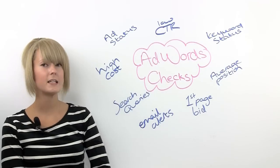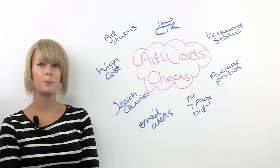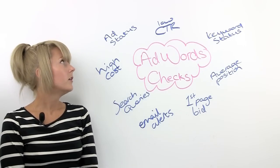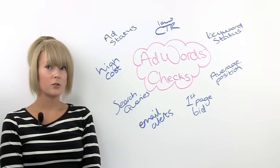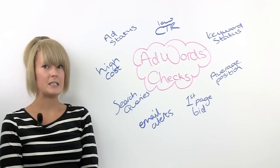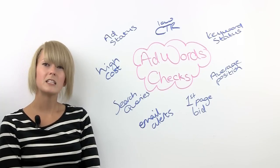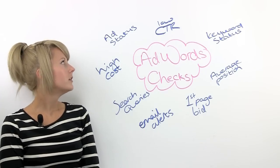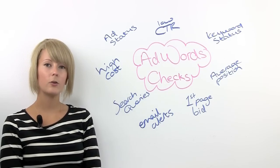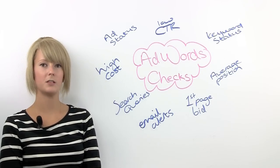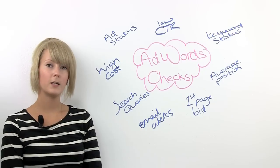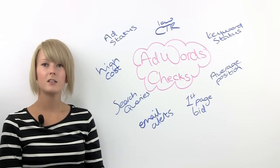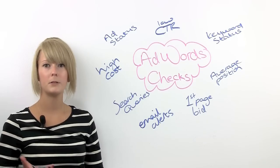If a keyword has a particularly low click-through rate, it could be bringing down the rest of the keywords in that particular ad group. You need to check this often because if it's got a low CTR, it's going to be reducing your quality score and you're eventually going to end up paying more per click. Go to your Keywords tab and either click on the CTR column to filter low to high, or put a filter for anything that's got a click-through rate below 1%.